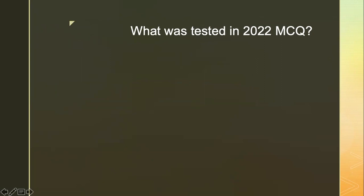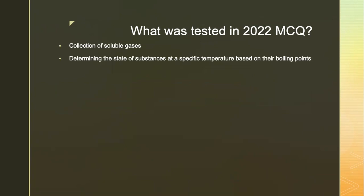Let us review what was tested last year. Collection of soluble gases using the gas range. Determining the state of substances at a specific temperature based on their boiling points, which is under the topic of KPT. The test for hydrogen gas. The concept of elements, compound and mixture — specifically, choosing the correct diagram to represent elements, compounds or mixtures.